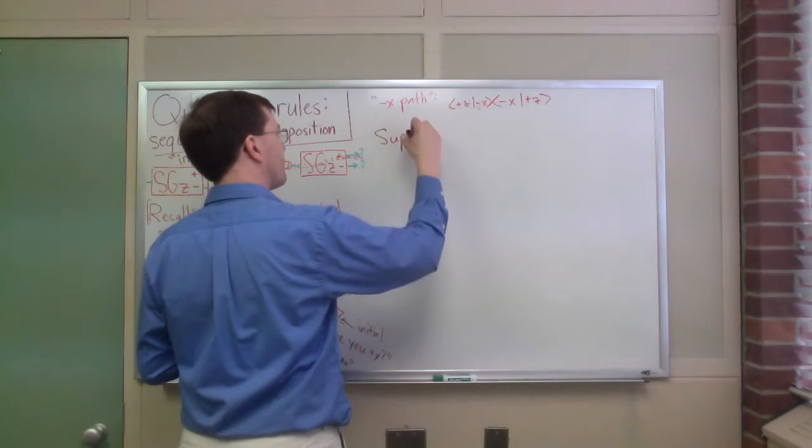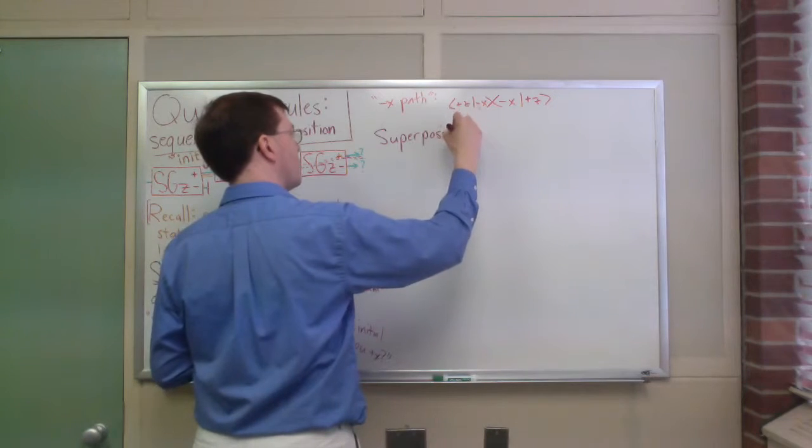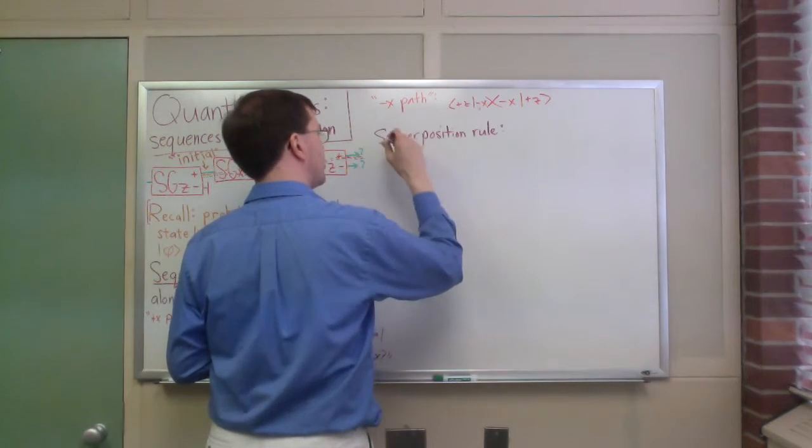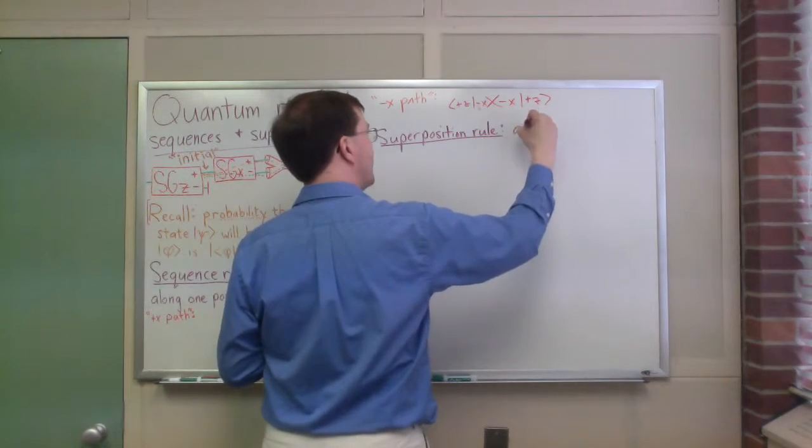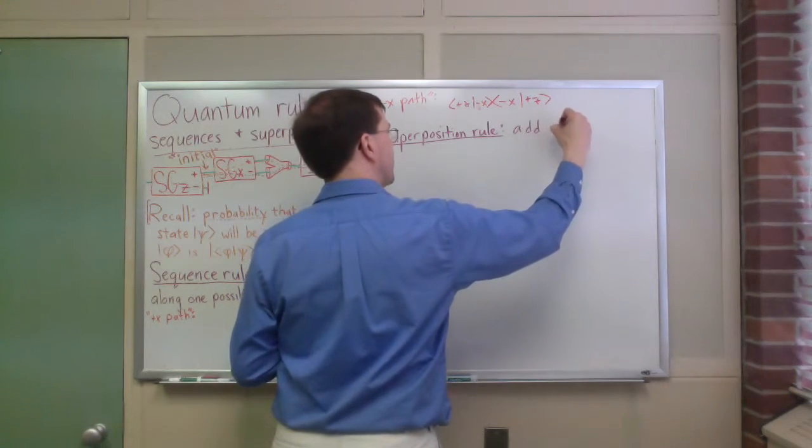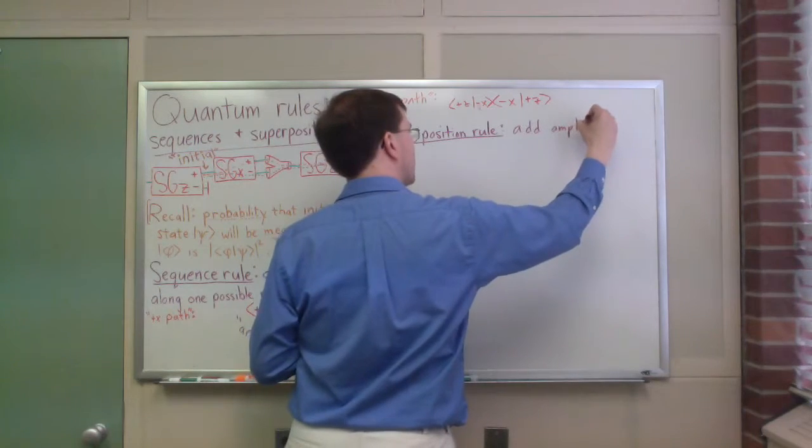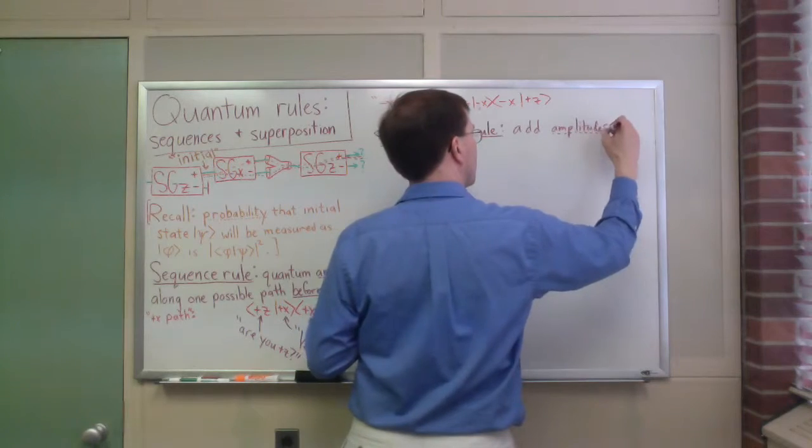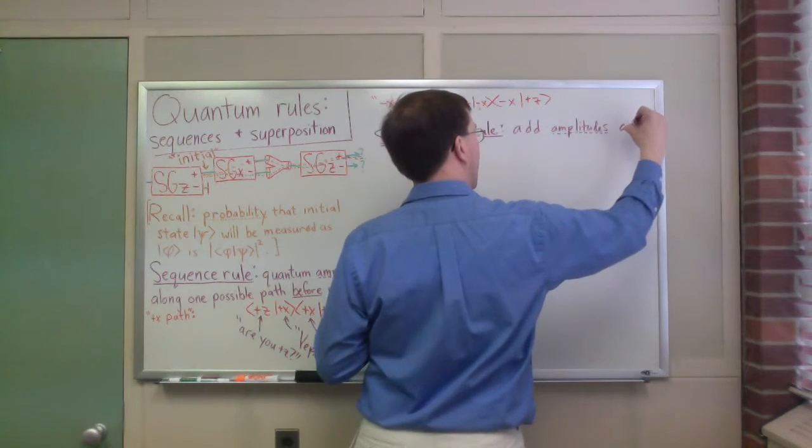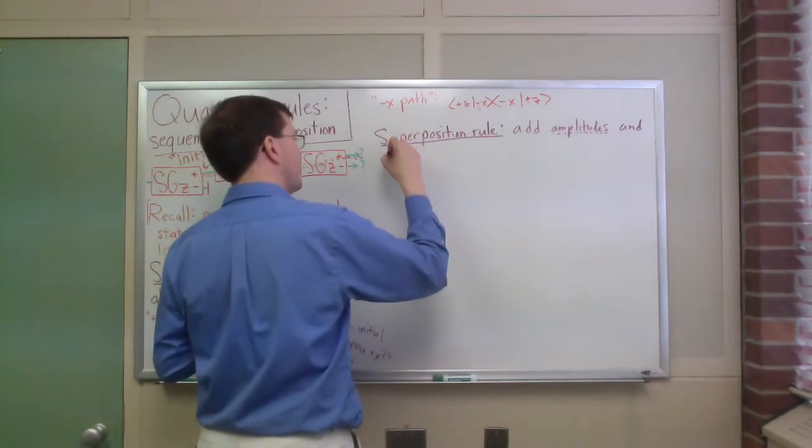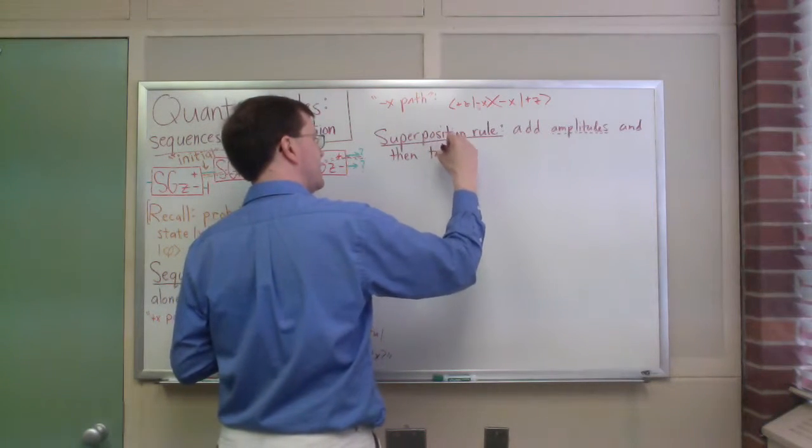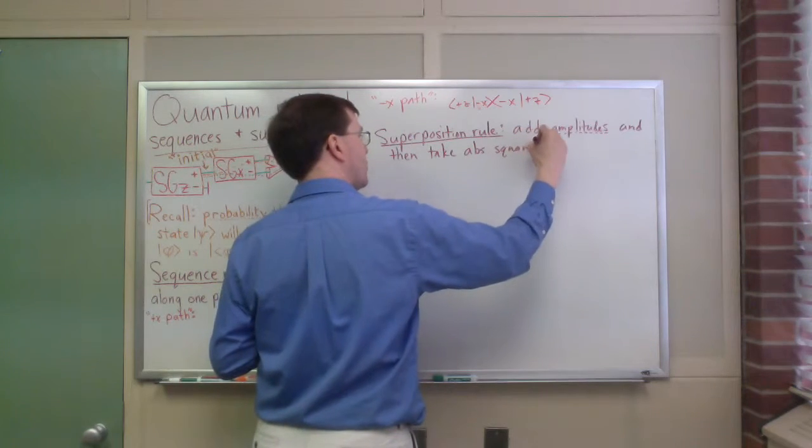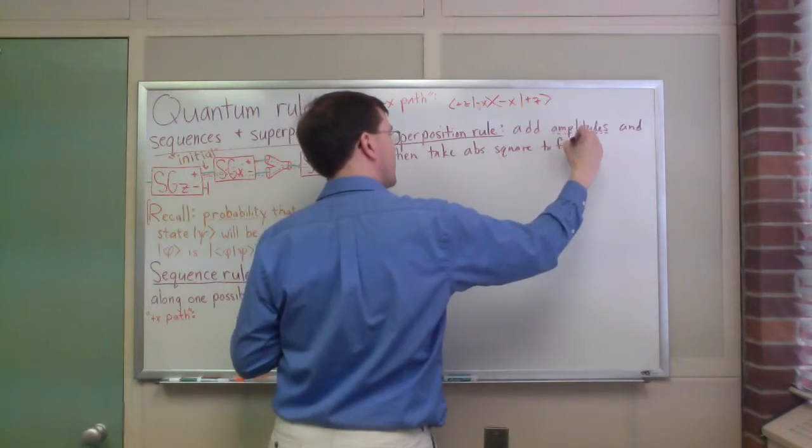And the superposition rule says that I add amplitudes, probability amplitudes, quantum amplitudes, and then take the absolute square to find the probability.